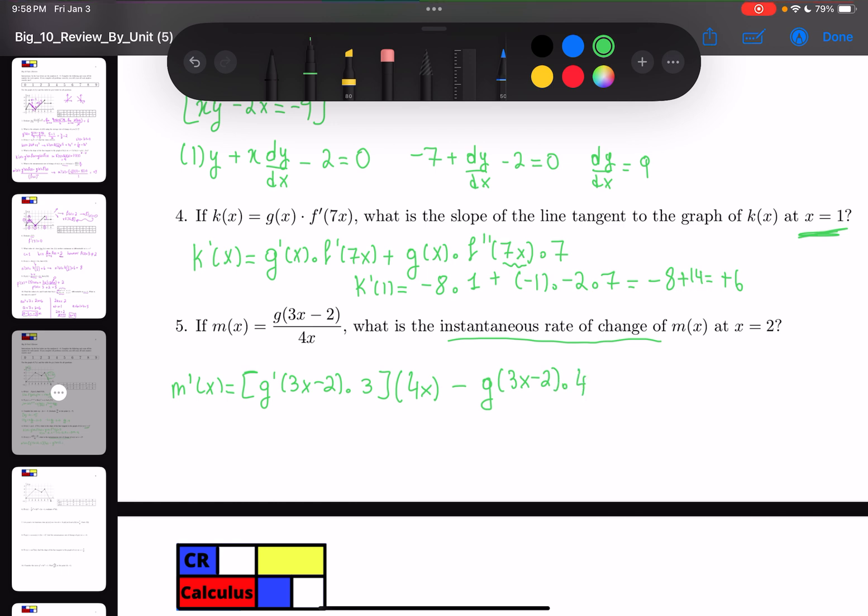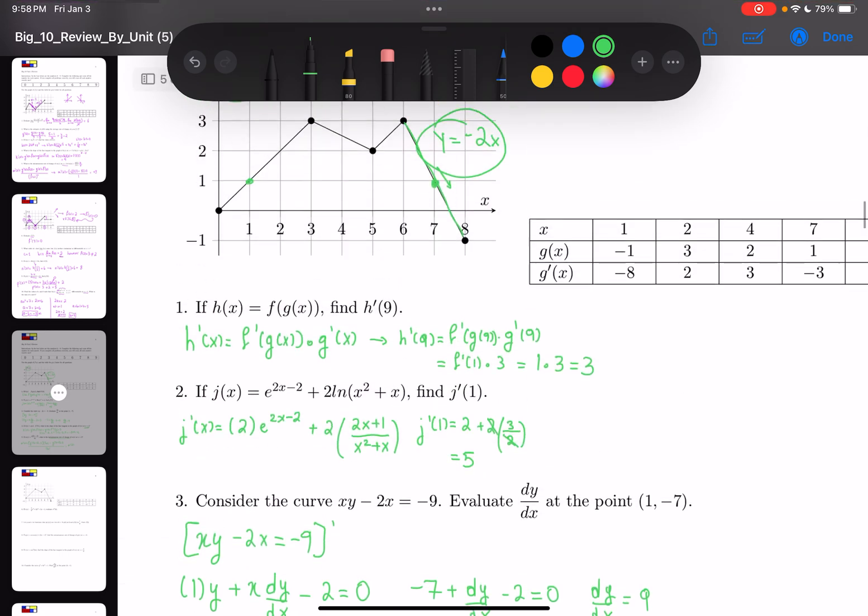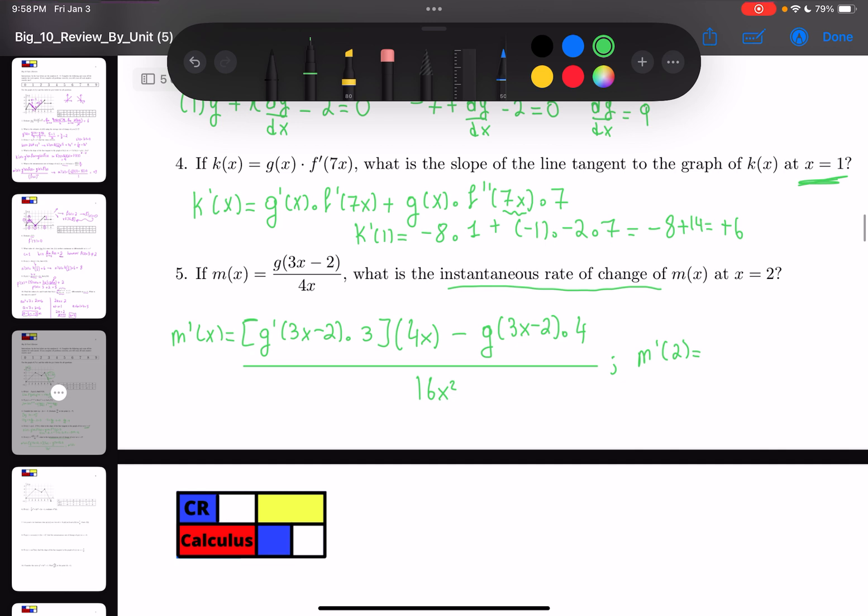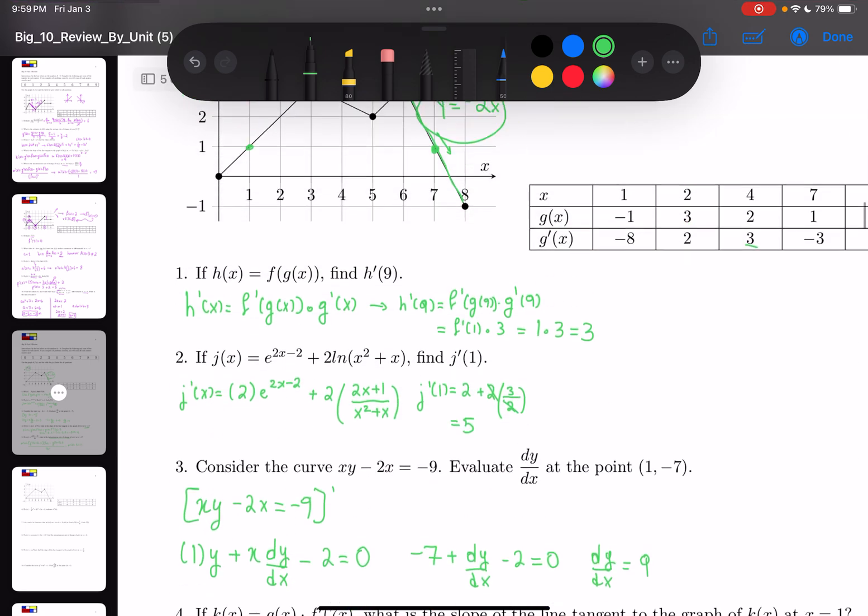So m'(2): 3*2 = 6, minus 2 is 4, so g'(4) = 3. So 3*3*8 minus g(4), which is 2, times 8.